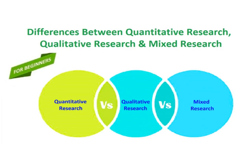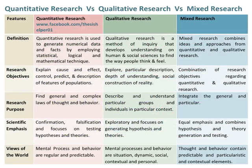Differences between Quantitative Research, Qualitative Research, and Mixed Research. Quantitative research is used to generate numerical data and facts by employing statistical, logical, and mathematical techniques. Qualitative research is a method of inquiry that develops understanding on human and social sciences to find the way people think and feel. Mixed research combines ideas and approaches from quantitative and qualitative research.